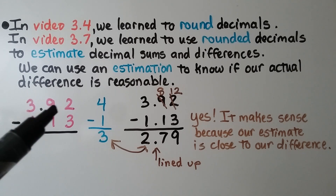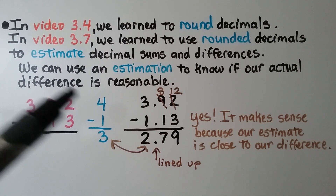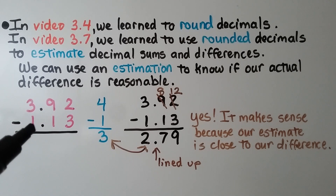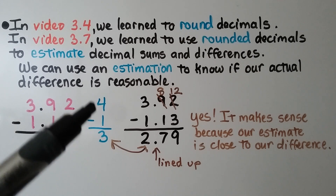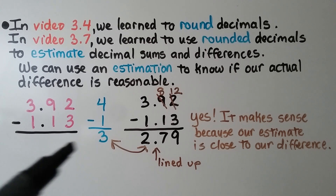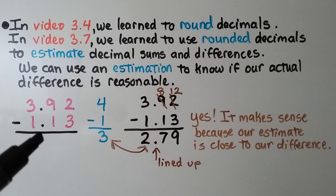This 9 is going to tell the 3 whole ones to round up to a 4. And this 1 is going to tell that 1 to stay the same. We have 4 minus 1, which is 3. So our difference should be about 3.